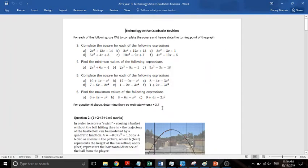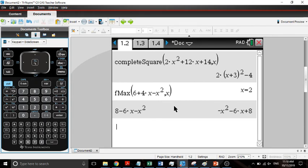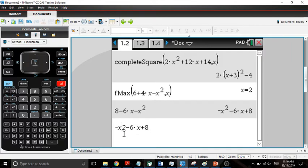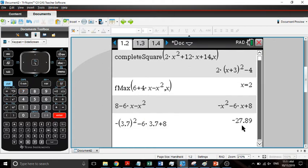Now when we want x is 3.7, what we do is we take that 3.7 and we put it into here. So I'm going to press the up arrow, I'm going to press enter to bring that back. It's like doing copy and paste. And now instead of x I'm going to put in 3.7, and instead of this x I'm going to change this to 3.7 as well. And it tells me it's at negative 27.89.